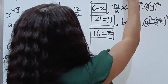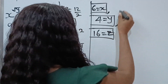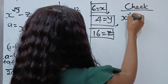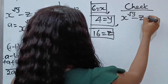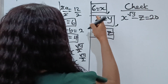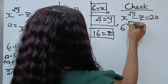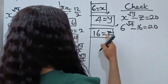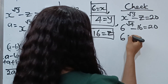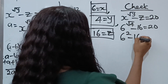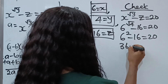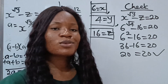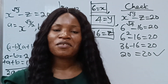Now it's time to check. The equation says x to the power of square root of y minus z equals 20. Our x is 6, so we have 6 to the power of square root of 4 minus 16 equals 20. Square root of 4 is 2, so 6 squared minus 16 equals 36 minus 16 equals 20. 20 equals 20 — what we did is correct. Thank you so much for watching and have a lovely day.